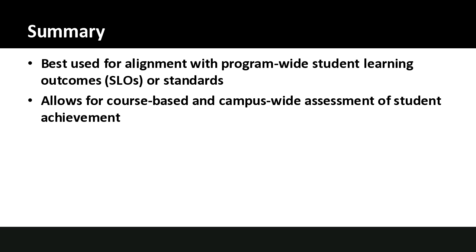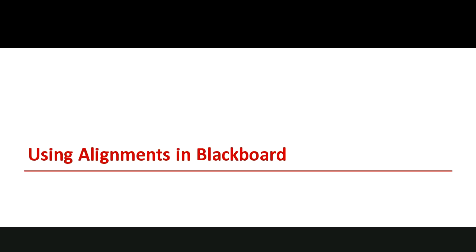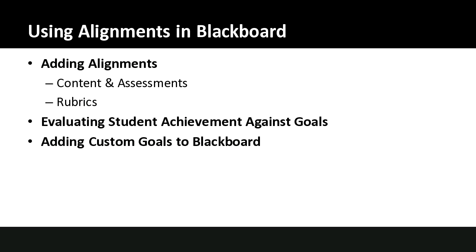This allows us to gather data from a course — so it's course-based assessment — but we're doing it campus-wide, department-wide, or program-wide to determine student achievement. So let's look at what this looks like in Blackboard. There are three different components: how you set up the alignment structure, how you evaluate achievement against that structure, and finally how you create those individual goals.